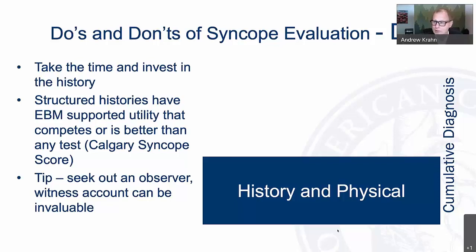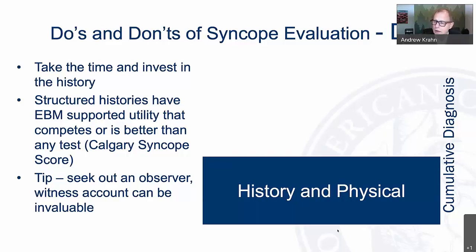There's something called the Calgary Syncope Score — a structured history where you ask seven questions that helps differentiate between neurologic and cardiovascular causes. There are three versions of this led by Bob Sheldon. One thing often overlooked is seeking out an observer who notices pallor or seizure-like activity. Postural aspects and occurrence of injury are key clues to determine the probable cause, and that directs the extent and nature of investigations.